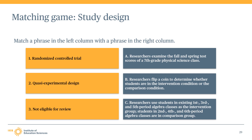The last phrase, not eligible for review, matches to choice A: researchers examined the fall and spring test scores of a seventh grade physical science class. This is an ineligible design because there is no comparison group. The study looks at the same group before and after the intervention — a pre-post design. Scores may increase between pre-test and post-test for many reasons unrelated to the intervention. These kinds of pre-post designs with no comparison group are not eligible for review under the WWC group design standards.